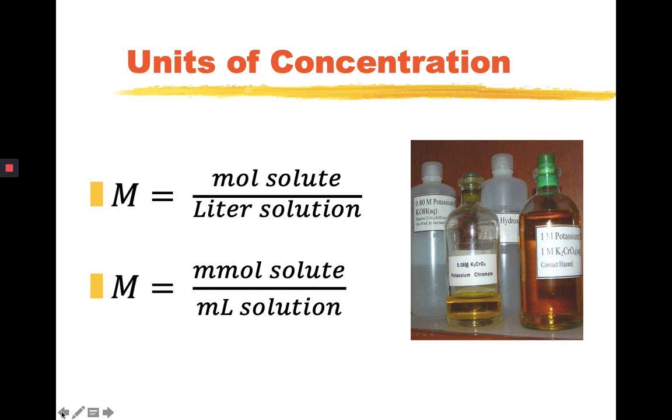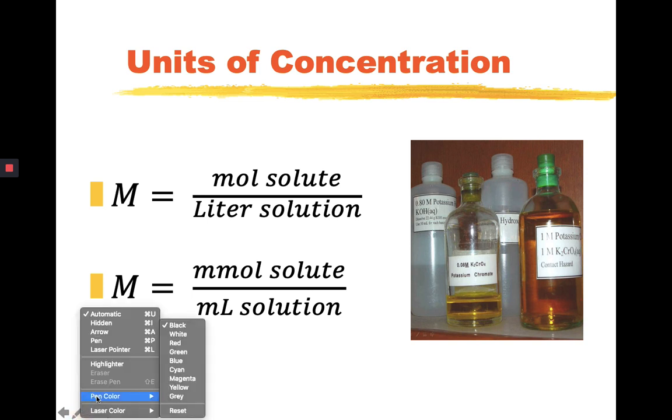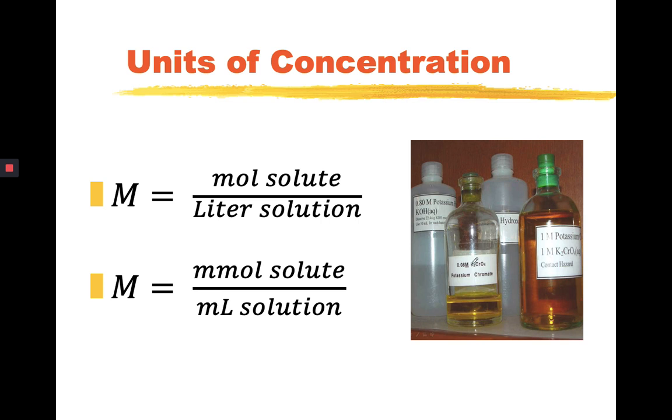Another unit of concentration is molarity, which is represented by the big letter M. It gives us the number of moles of solute per liter solution. You might have noticed that chemicals in the lab are usually in molarity. It's labeled in M. So molarity, the unit there is molar. For example, in the picture, you are given 0.08 molars of potassium chromate. The big letter M there represents the concentration in terms of molarity.